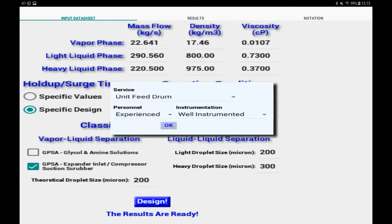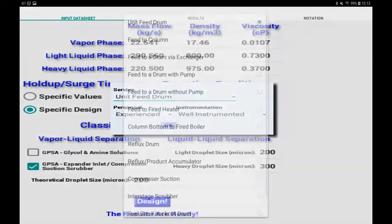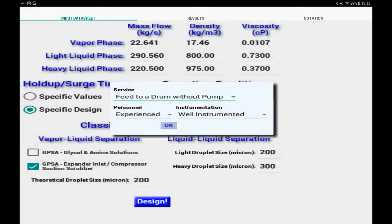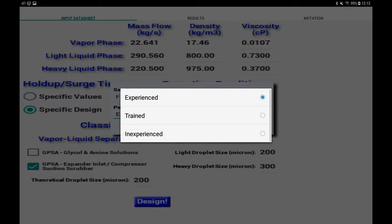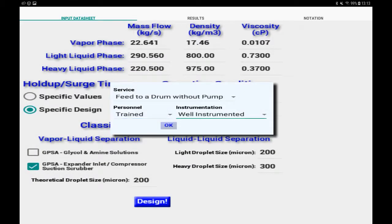Now, let's come back to the input data sheet tab and determine the hold-up surge times in another way. Here, we specify the service type and the quality of personnel and instrumentation.